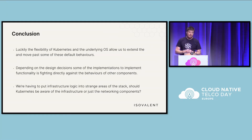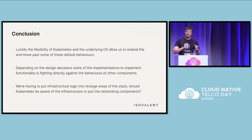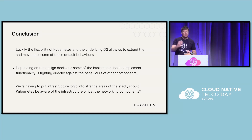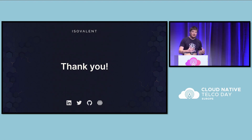In conclusion, the flexibility of Kubernetes and the underlying operating systems is allowing us to move past these default behaviors, which have made sense in the cloud but are becoming a hindrance and a burden in telco and on-prem environments. Depending on some design decisions, some of the hacks we've had to implement almost fight against existing components — for instance, some of the egress work fights against the default behaviors of CNIs. A final thought: we're having to put infrastructure logic now into different areas of the Kubernetes stack — should it go into Kubernetes itself or live in different areas? That's a quick overview of the issues we're facing in terms of getting traffic in and out, and some of the ways we're getting past those problems. Thank you very much for your time today and hopefully you have a good conference.